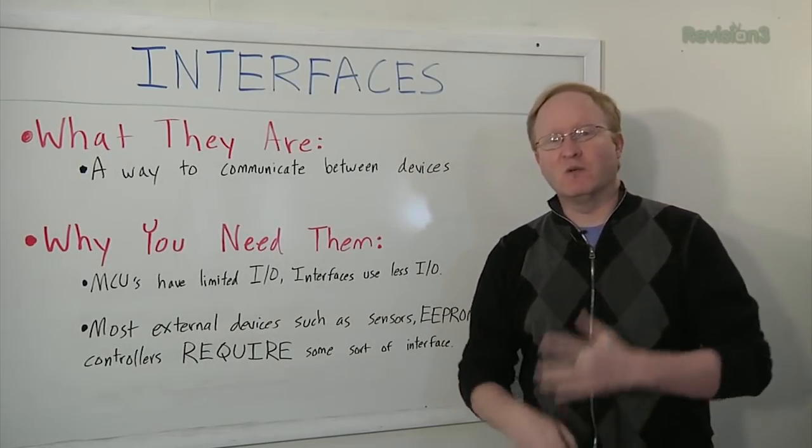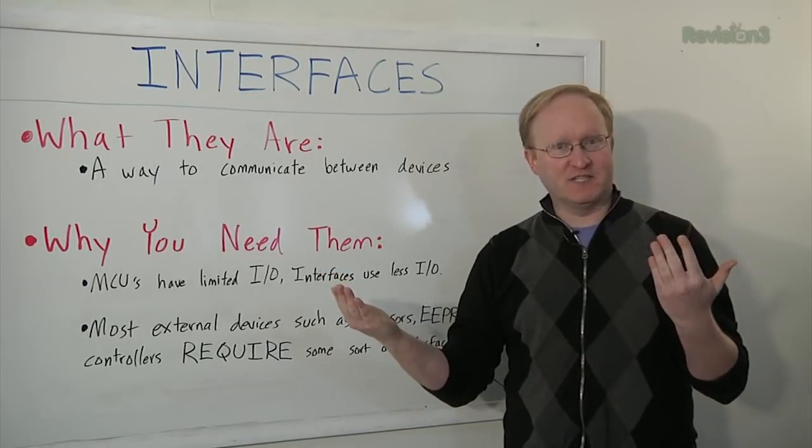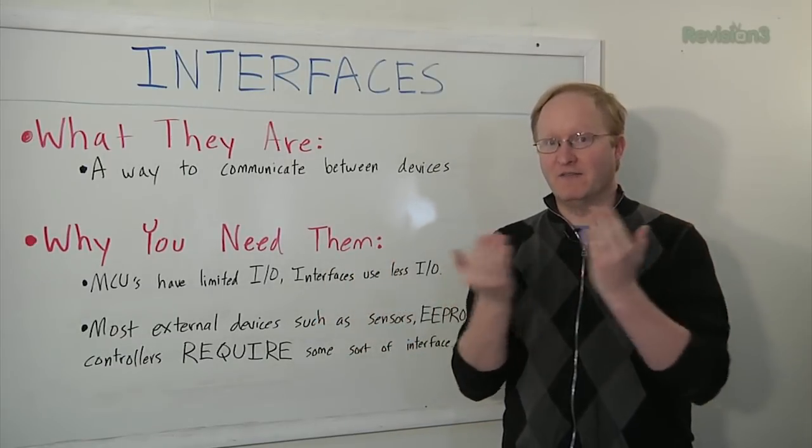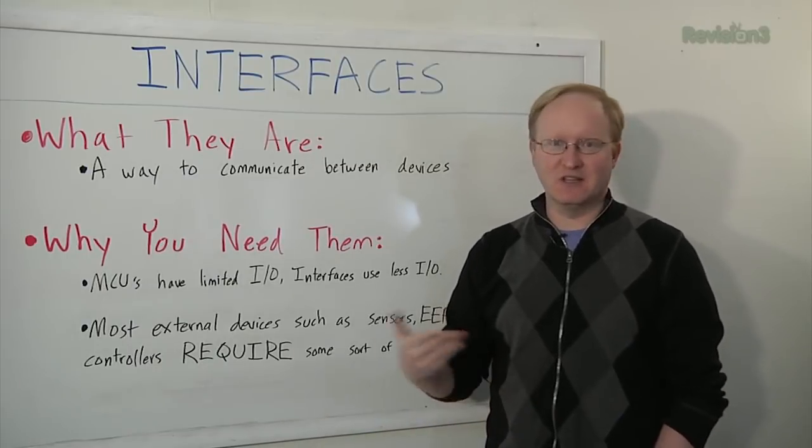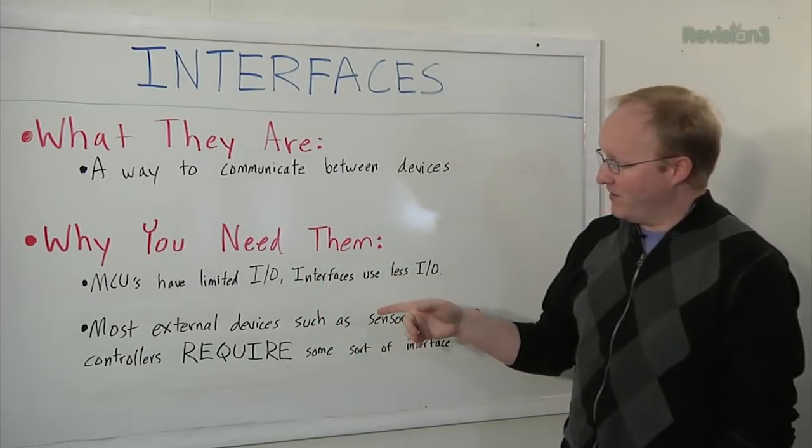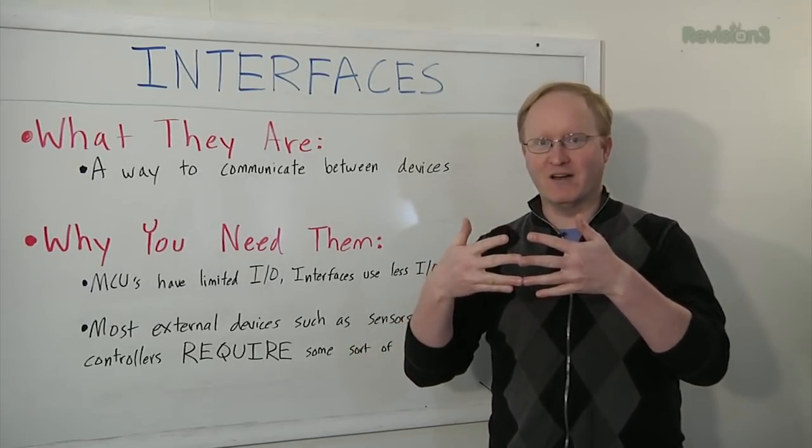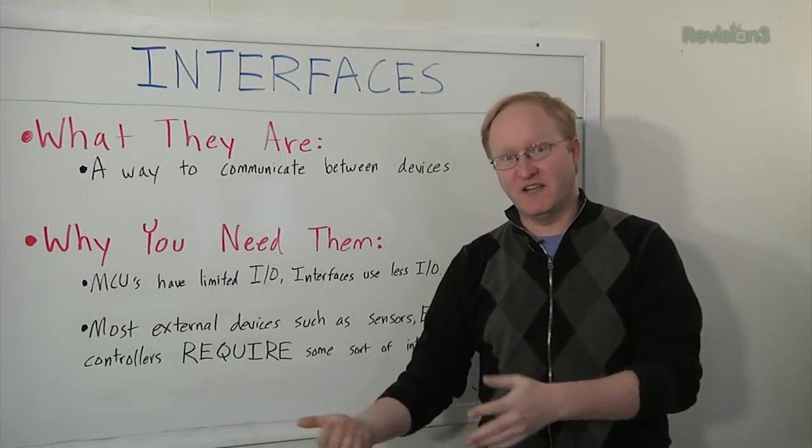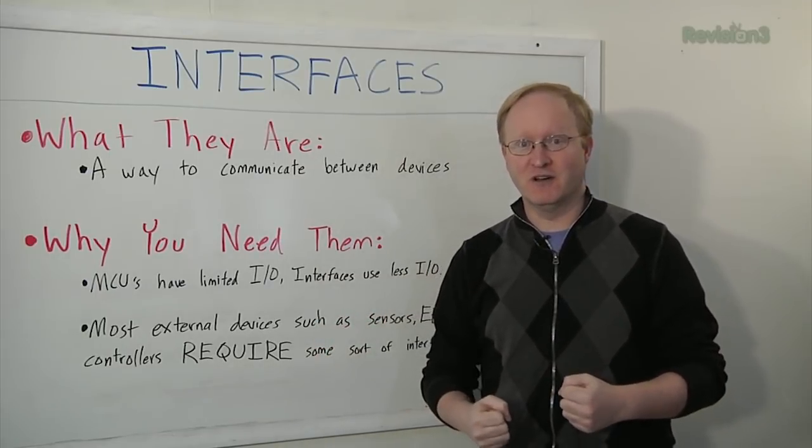Interfaces. What are interfaces? Well, interfaces are predefined ways to communicate between electronics. For instance, you might have a microcontroller here, and you want to talk to a temperature sensor. How do you do that? You do that with an interface. The temperature sensor will have an interface, such as SPI, and that is the way I have to communicate between my devices. So, why do you need interfaces? Well, microcontrollers don't have that much I/O. Even a really large one, there's always a limit. So you're going to run out of I/O eventually if you hook up enough stuff. Interfaces give you a way to use less I/O. And the more important reason why you need them is because most external devices require an interface.